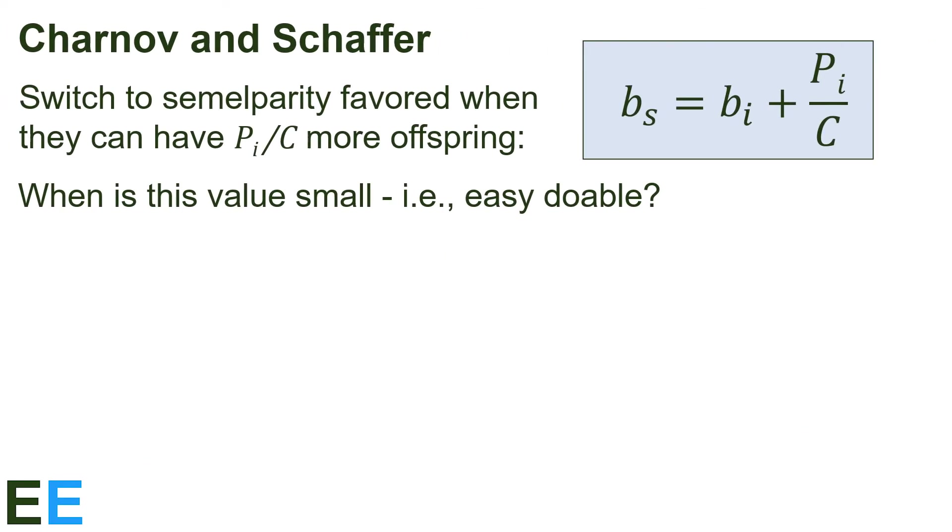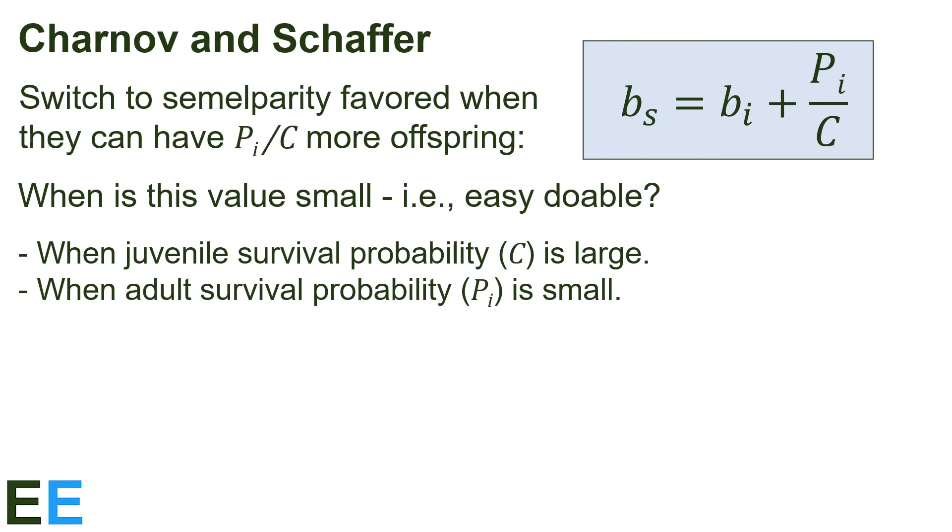The switch from iteroparity to semelparity is favored when the organism can easily have P sub I divided by C more offspring. When is this value small? That is, when is it easily doable with a single change caused by mutation? When juvenile survival probability C is large, the second term will be small, and the semelparous organism doesn't need to have too many more offspring to equal the fitness of the iteroparous. When adult survival probability, P sub I, is small, the second term will be small as well.